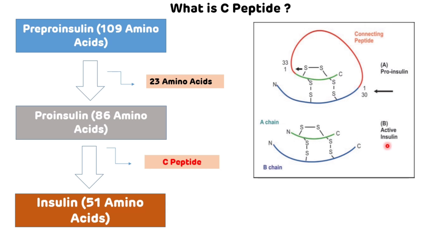This active insulin contains 51 amino acids and has two polypeptide chains — the A-chain and the B-chain. The A-chain has 21 amino acids and the B-chain has 30 amino acids. In the conversion of proinsulin to active insulin, there is a removal of the connecting peptide, which is known as C-peptide.